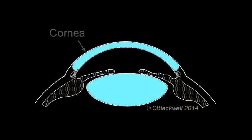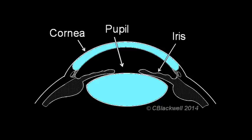In diagram view, the cornea is like the crystal of a watch arching over the iris. In the center of the iris is the pupil, which changes size to regulate the amount of light entering the eye.